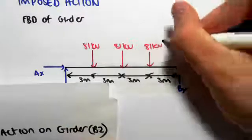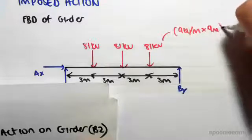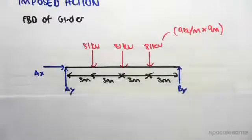We get that from nine kilonewtons per meter times by nine meters. And those act at three meter intervals, as shown from this diagram here.